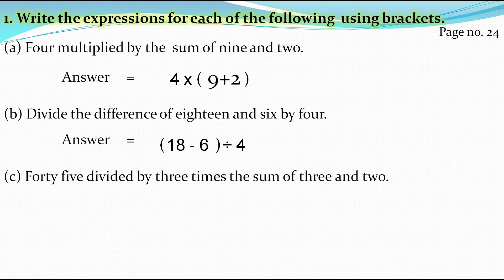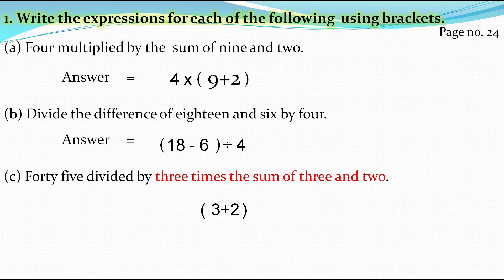The third expression is: 45 divided by 3 times the sum of 3 and 2. There are 3 parts. The first part is sum of 3 and 2, so write 3 plus 2 and put it in the bracket. The second part is 3 times the sum of 3 and 2, so we multiply this bracket with 3. This becomes a separate expression, so we put it in the next bracket — a square bracket. The remaining part is 45 divided by this bracket.